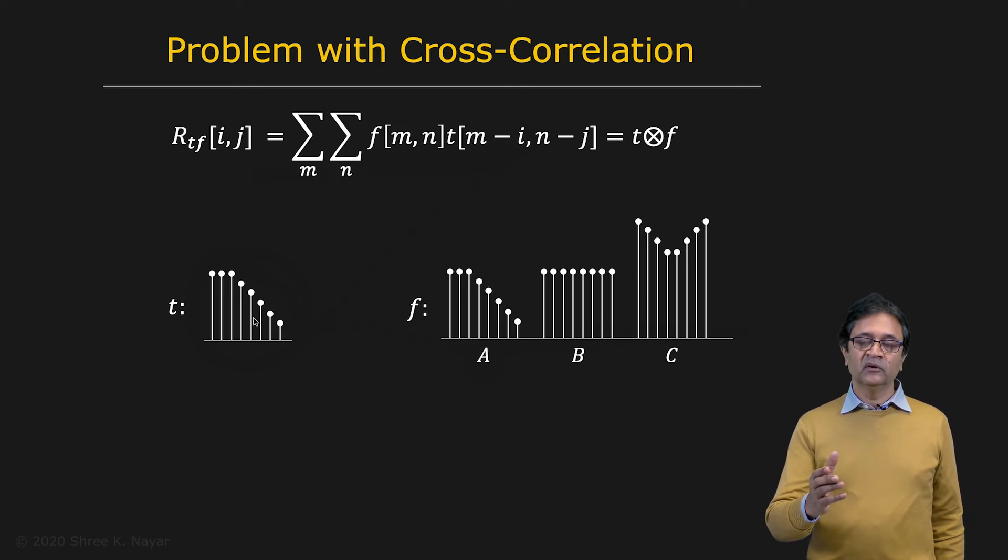And we want to declare A to be the point where the template exists, because this exactly matches this. So guess for a moment what the result is going to be. What is going to be RTF at A, B, and C, and which one is going to be the highest?